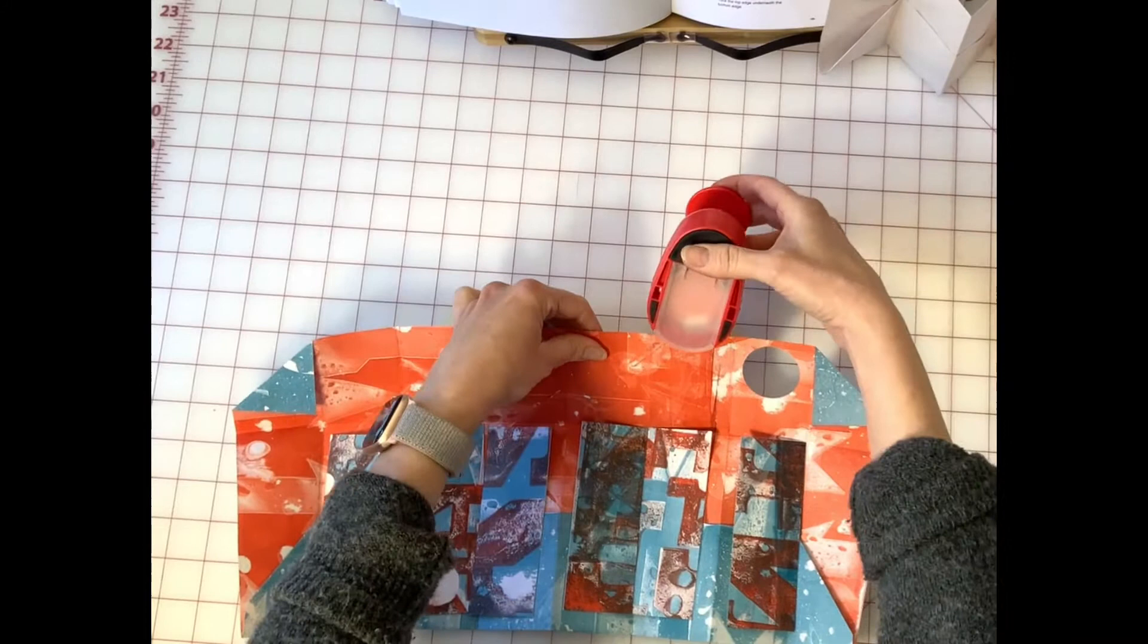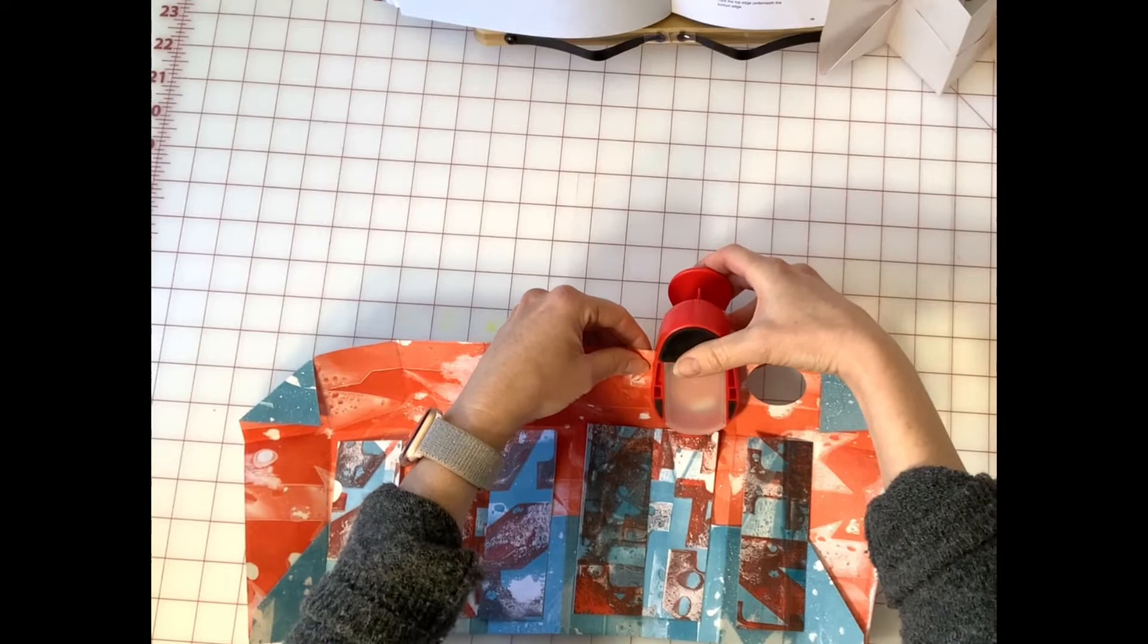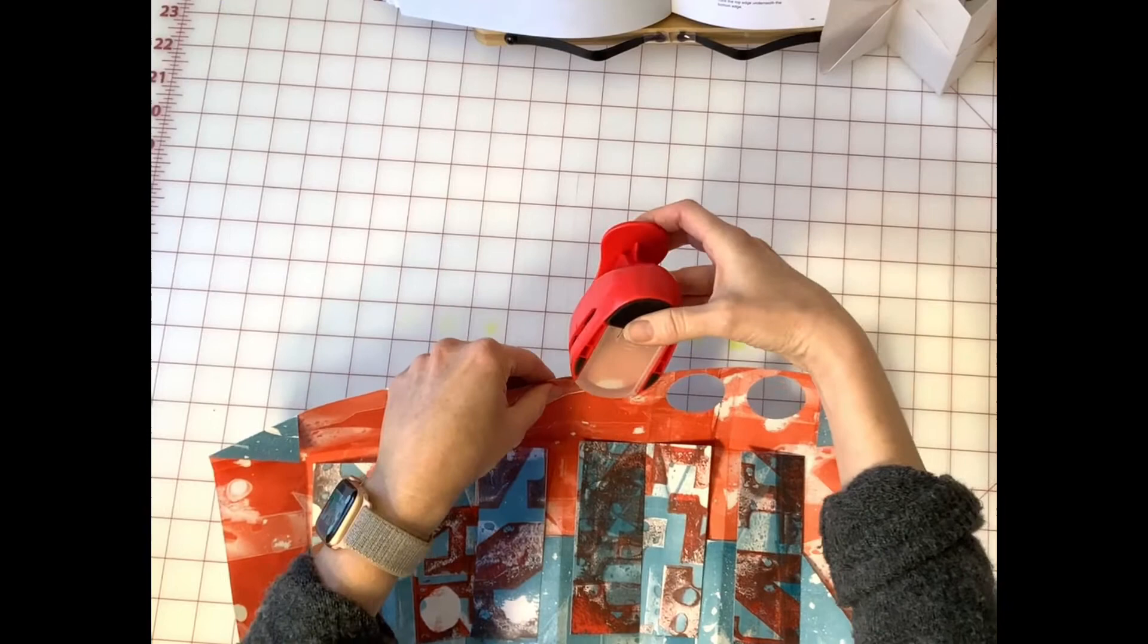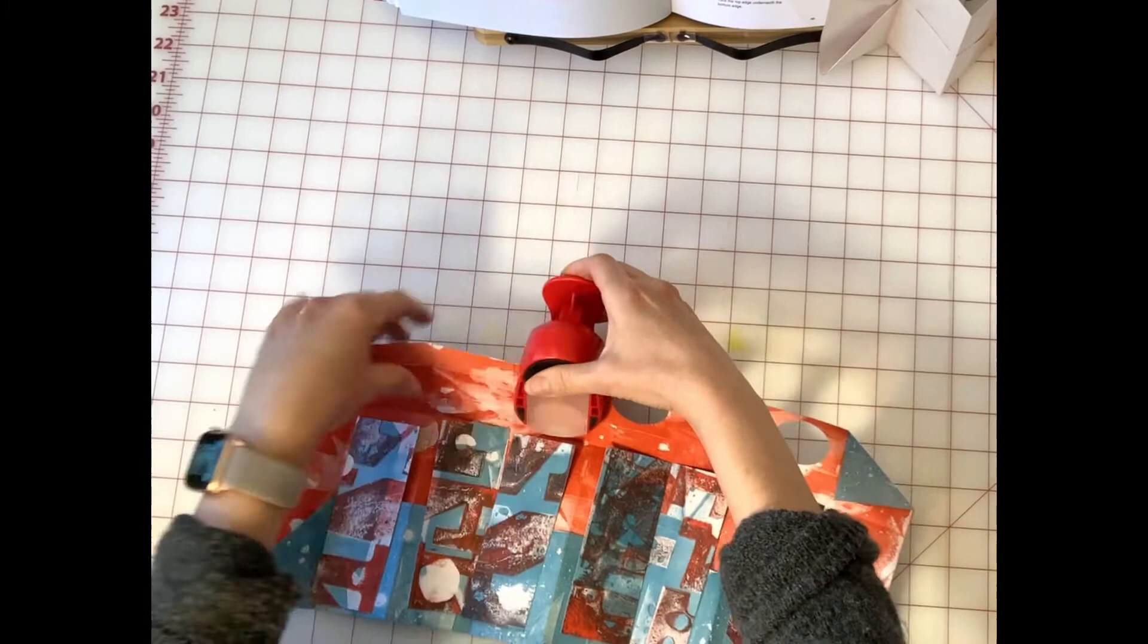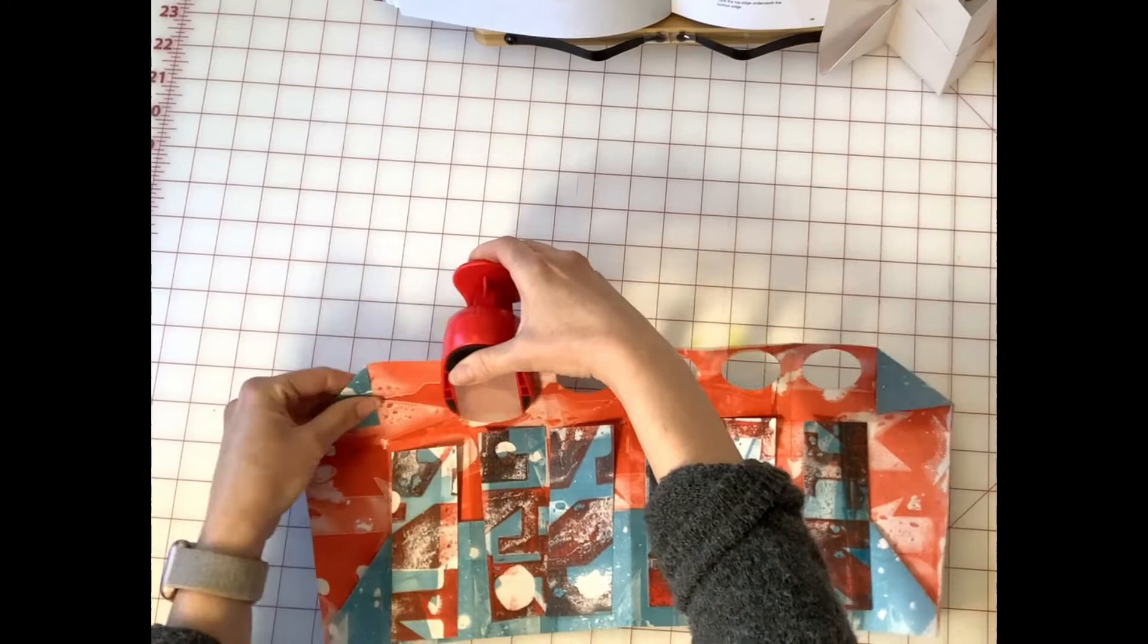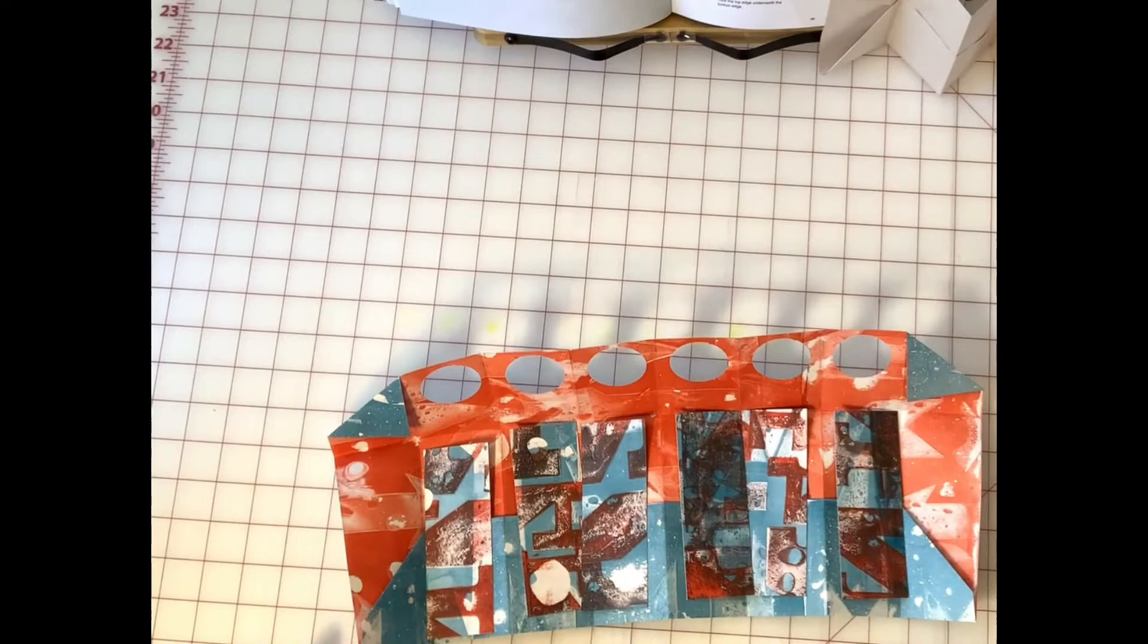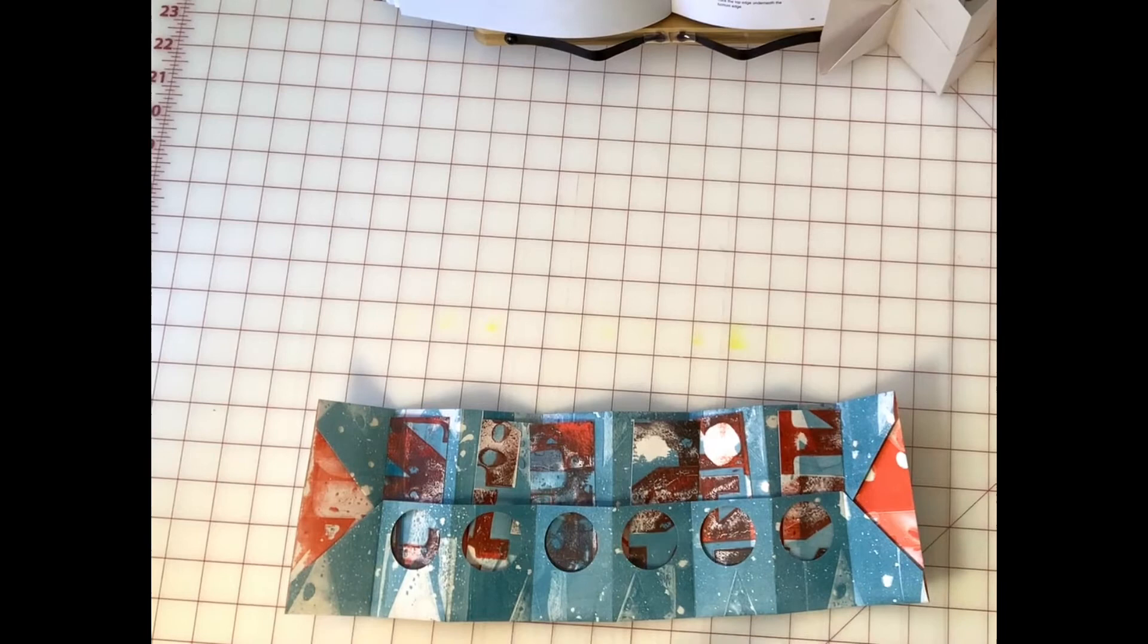I decided to further customize my accordion by punching some holes in the spaces where the pockets are. And that allowed me to see through that pocket layer to the cards. So I'm just using a circular hole punch. Another way to customize this book would be to take the inserts themselves and either round the corners or punch holes in those.